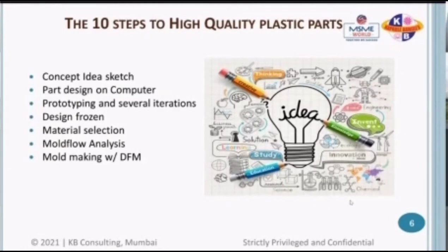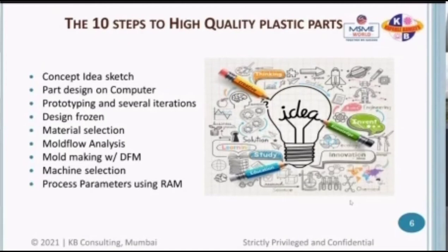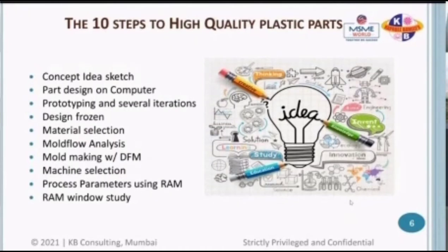Once you're done with mold flow analysis, you make the actual mold or die for the product. Before doing that, you also consider DFM review — design for manufacturability — to ensure you're creating a mold you can really use to manufacture the product. Then you select the right machine depending on the size and cavitation of the mold. You select the process parameters using RAM — Real Art of Molding — and create a RAM window. This is the basic 10-step criteria to follow when creating a new plastic product from a concept idea.